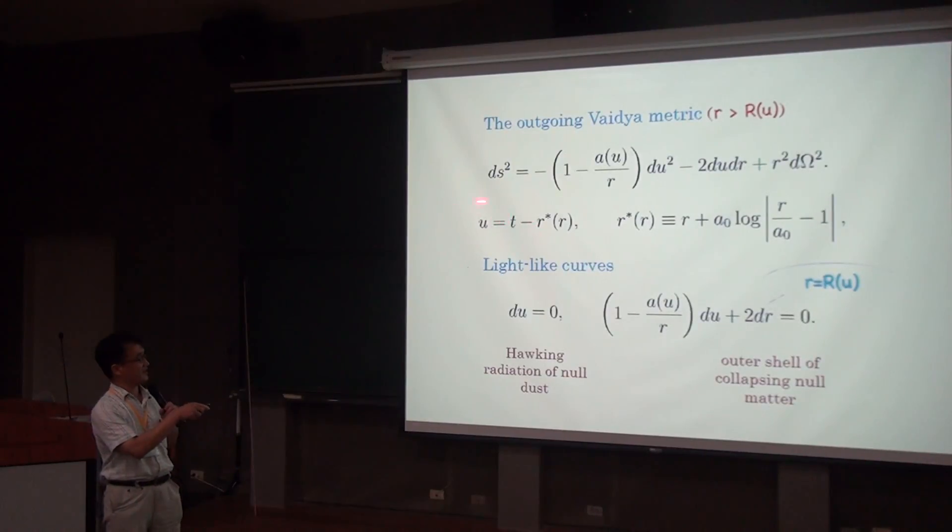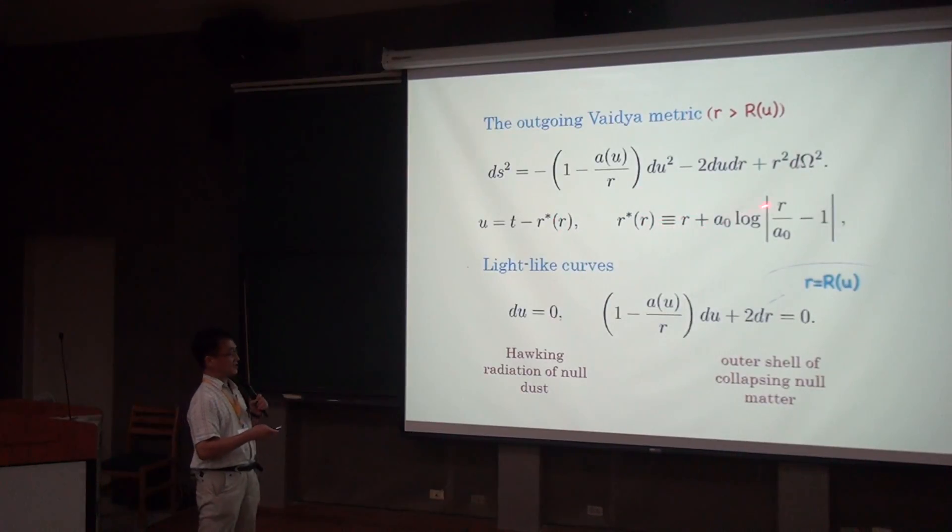There's a dramatic difference over here. So for an infalling observer to fall in within finite time, you rely on the validity of this expression. But if A0 is not a constant, this expression cannot make sense anymore, right? Because the value of A0 would change from finite value to 0.